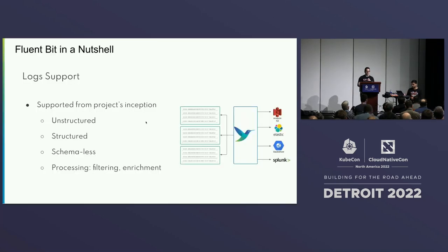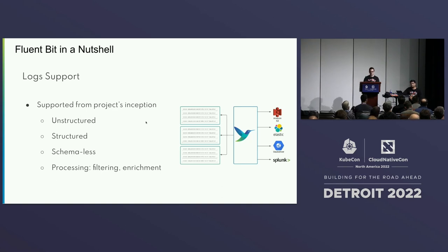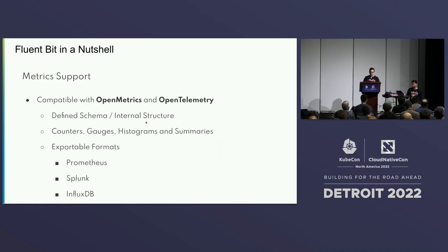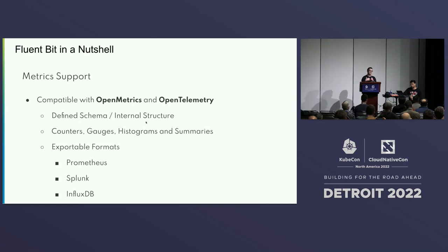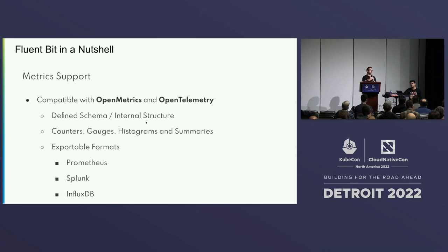Logs, metrics, and traces — this is all about this release. Logs have been there since the beginning; we support unstructured and structured schemaless data and processing like filtering and enrichment. From the metrics side, we support the standards of OpenMetrics and OpenTelemetry with a defined schema, and we support different metric types like counters, gauges, histograms, and summaries. When we say support metrics, it's not just Prometheus and OpenTelemetry — at the moment FluentBit gets metrics inside, we can even send those metrics to Splunk or InfluxDB. This keeps FluentBit agnostic and able to connect to different endpoints and endpoint types.